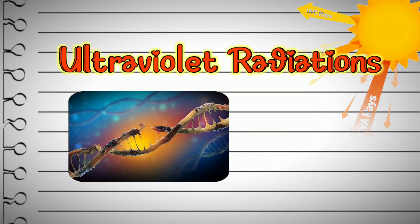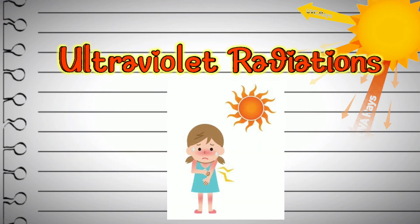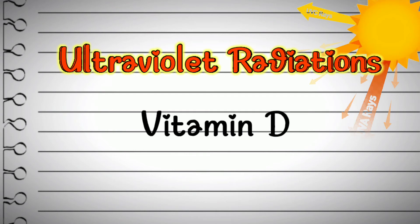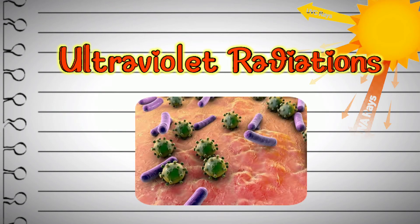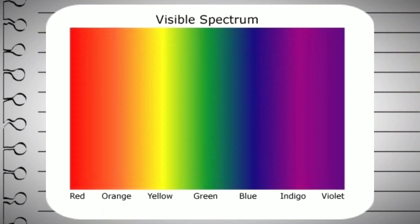Exposure of the skin to UV radiation increases the risk of sunburns and also the risk of skin cancer. UV rays are invisible to human eyes. The formation of vitamin D is because of UV radiation, and it also sterilizes surfaces it comes into contact with. UV radiation has both beneficial and harmful effects on living beings.